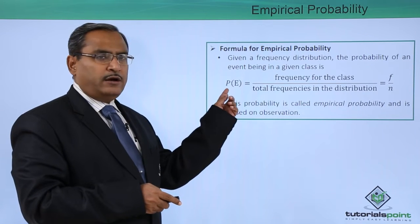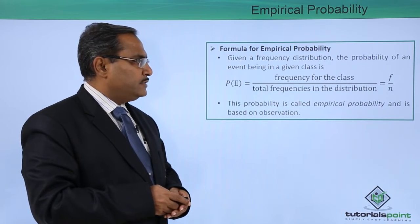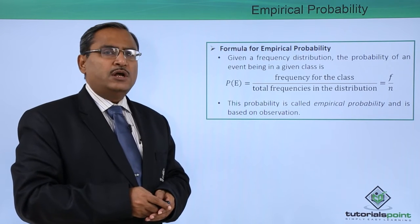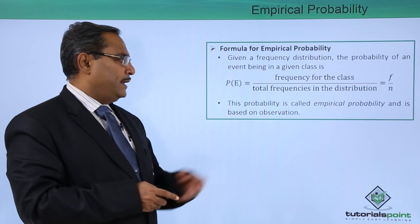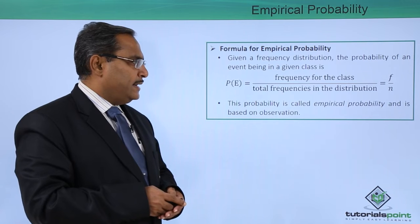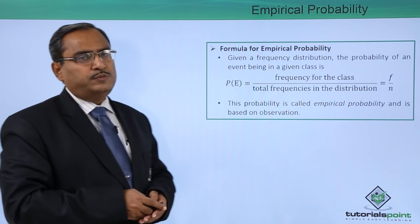The probability of event E equals frequency of the class by total frequencies in the distribution, that is f by n. This probability is called empirical probability and is based on observation.